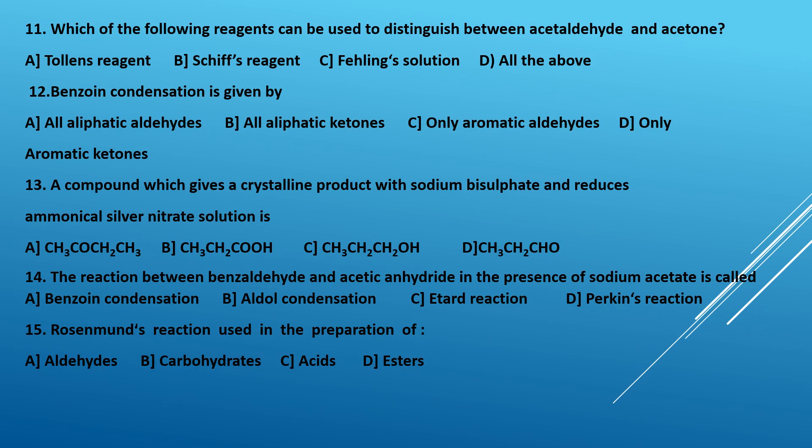Eleventh question: which reagents can be used to distinguish between acetaldehyde and acetone? A — Tollens' reagent; B — Schiff's reagent; C — Fehling's solution; D — all the above. All three reagents can be used to distinguish acetaldehyde from acetone, so the answer is D, all the above.